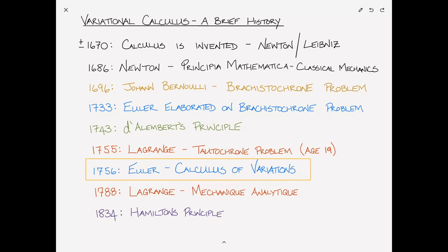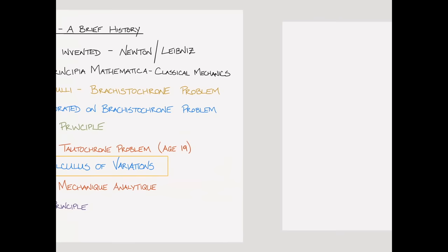Several years later, in 1834, Hamilton is examining specifically Lagrange's form of the problem, where he's minimizing a Lagrangian, and he extends it to all sorts of problems — with applications way beyond classical mechanics to problems in electromagnetism and quantum theory. Okay, enough about the history, let's get down to some business.